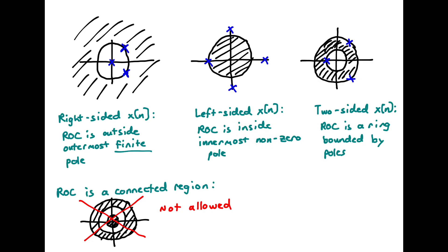For a left-sided sequence, the region of convergence is inside the innermost non-zero pole — we could still have a pole at zero, but the boundary is the innermost non-zero pole. For example, with poles on the imaginary axis and two poles on the real axis, the innermost non-zero pole defines the boundary, and the ROC lies inside that radius.